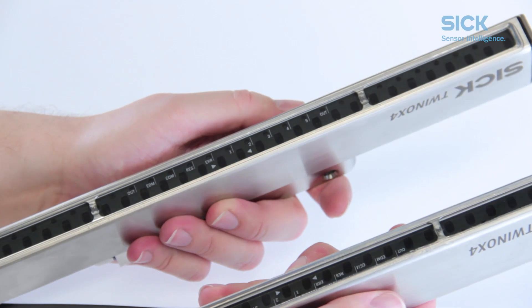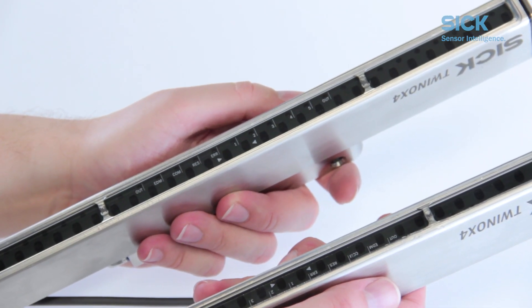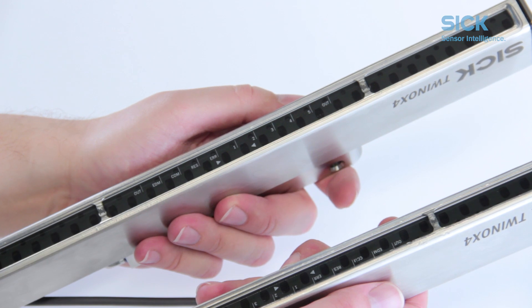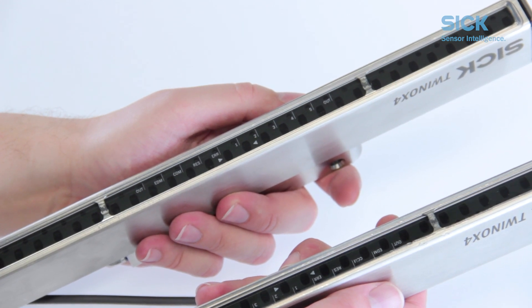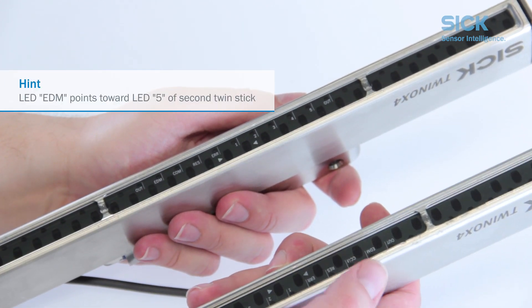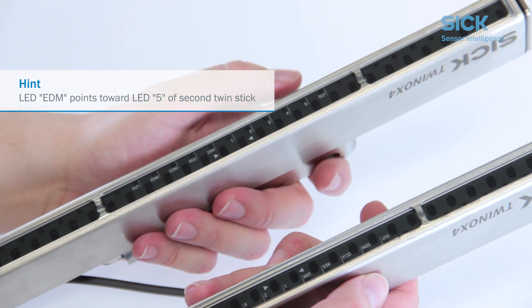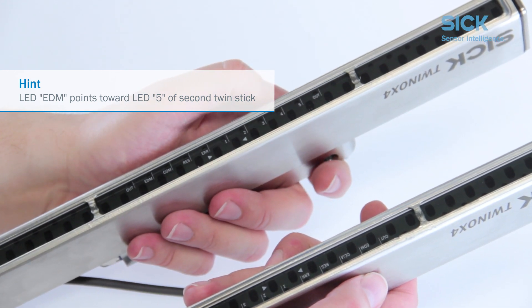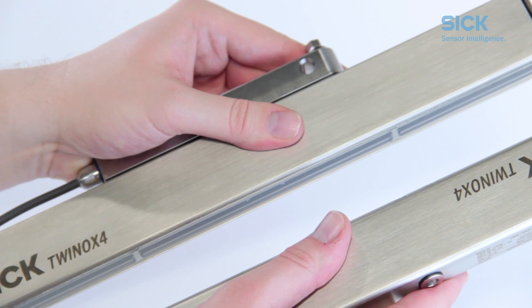While mounting the TWINOX 4, make sure that the optical elements are located opposite one another. You can easily ensure this by verifying that the EDM LED of the first twin stick points toward LED 5 of the second twin stick. Please check if this is the case.